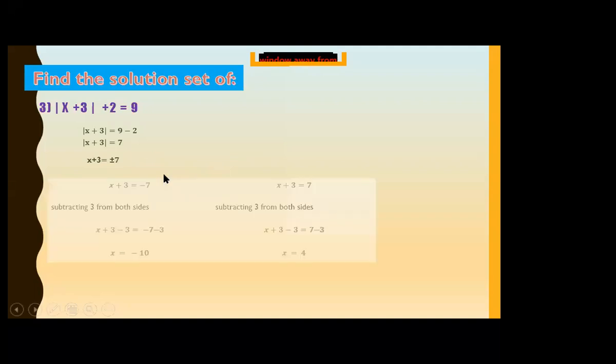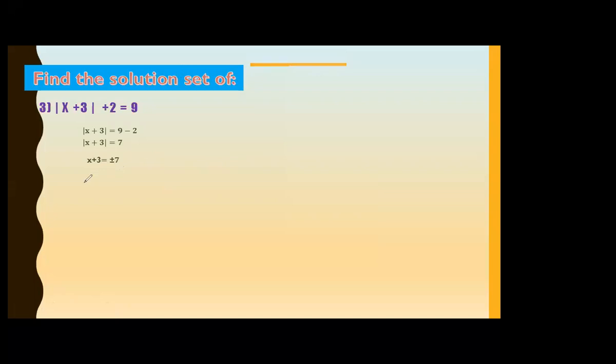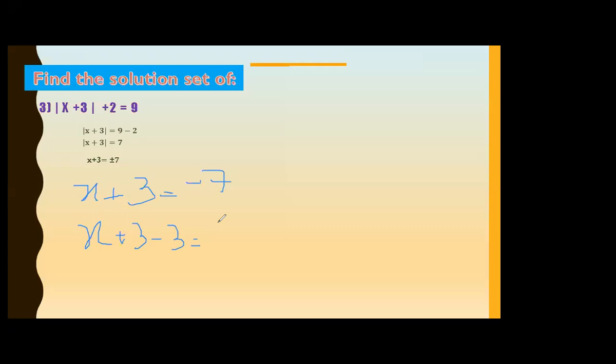Halima solves the left side: x + 3 equals minus 7. By subtracting 3 from both sides, plus 3 and minus 3 cancel, and on the right-hand side minus 7 minus 3 gives minus 10. So x equals minus 10.